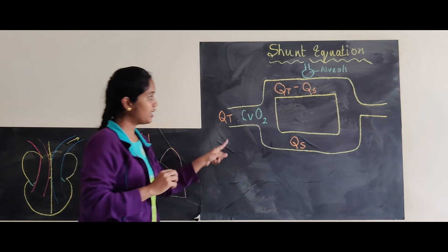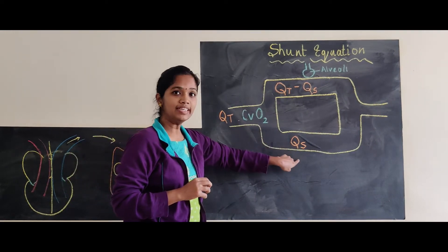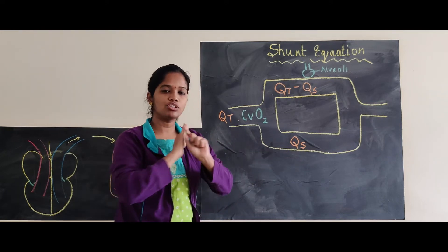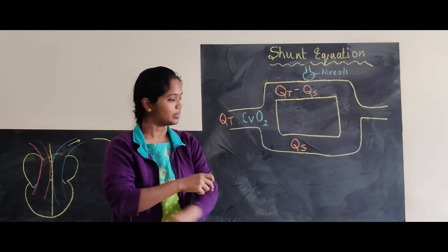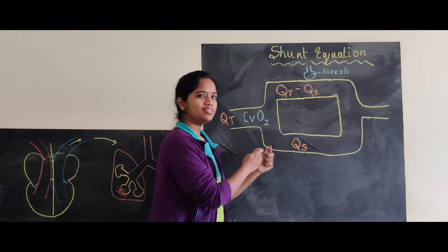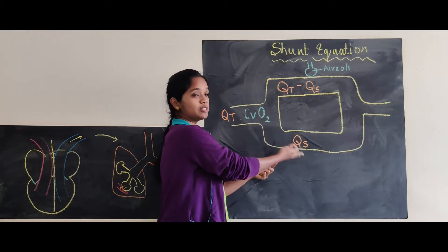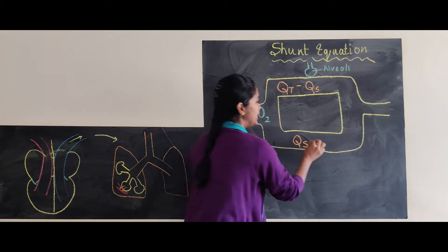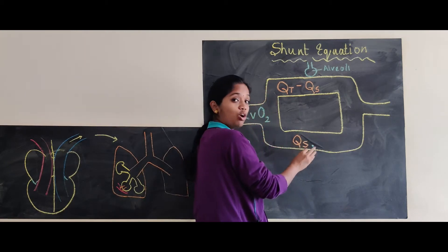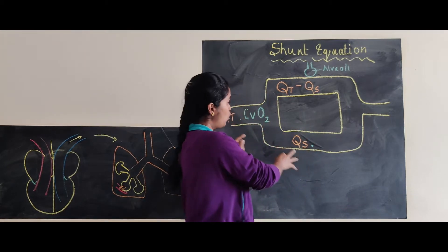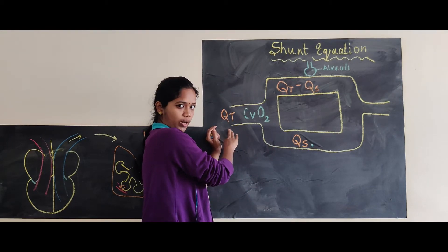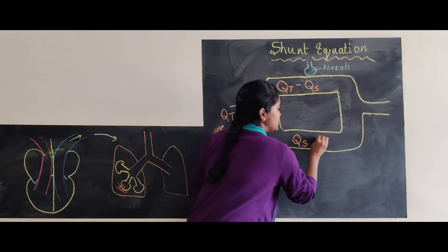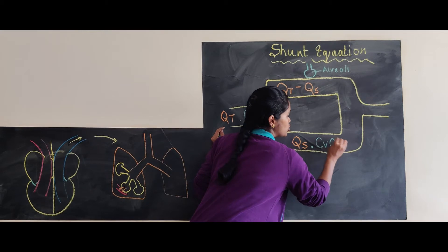A part of the blood is being shunted away. What do we understand by shunting? It is blood not getting oxygenated due to many reasons. That means nothing has happened to that blood — it is almost similar blood, just at a smaller proportion. So the oxygen content of that shunted blood will also be equal to what was received from the pulmonary artery, which is again venous oxygen content — CVO2.